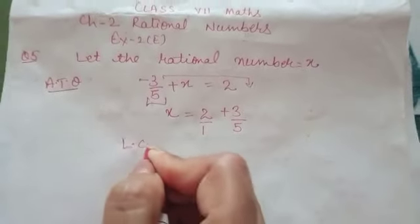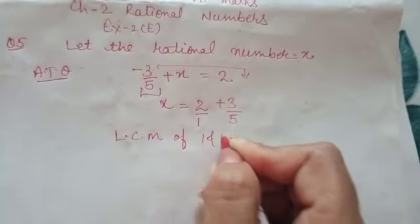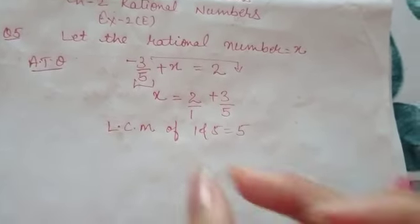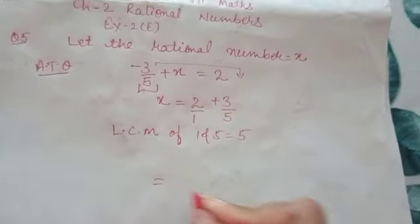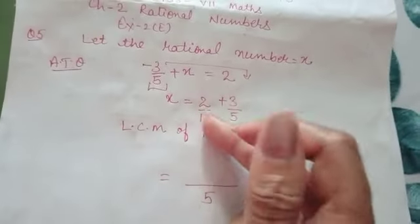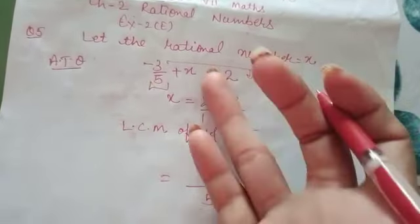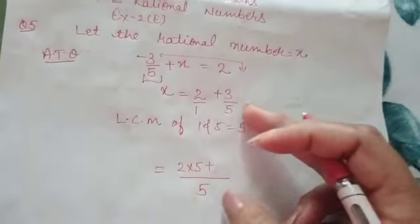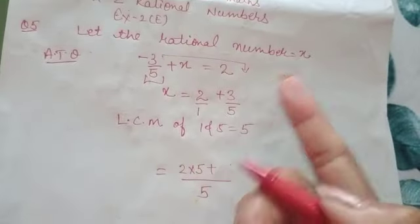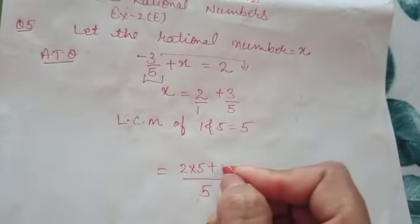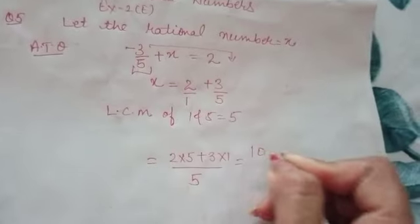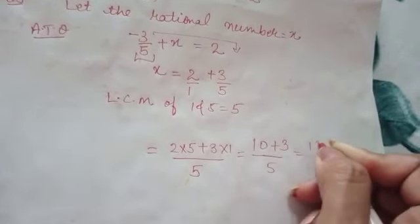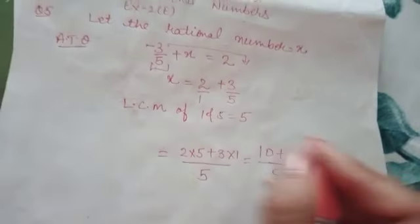Take the LCM of 1 and 5, it will be 5. It is not necessary to add 1 to another side; I am writing 1 here to avoid confusion. Over 1 as it is, 1 will divide the 5, you will get 5, that will multiply 2 into 5. Plus, 5 will divide 5, you will get 1, will multiply with 3, so 3 into 1. So, 10 plus 3 over 5 — 13 over 5 is the required answer.